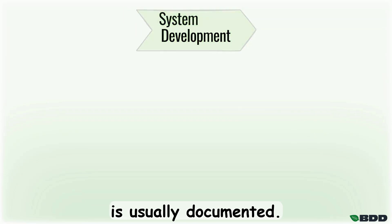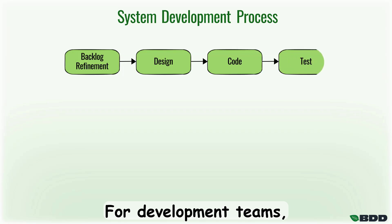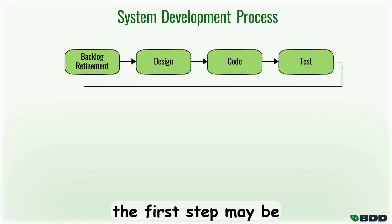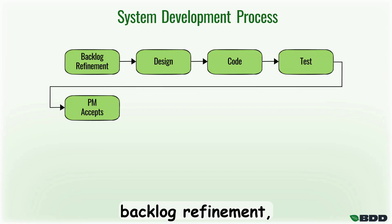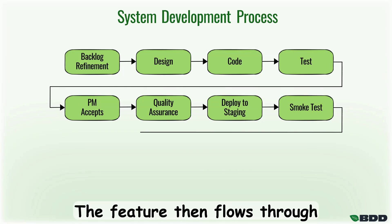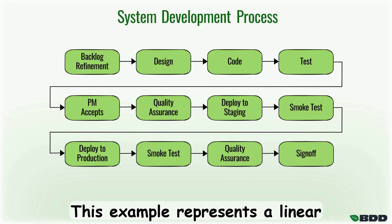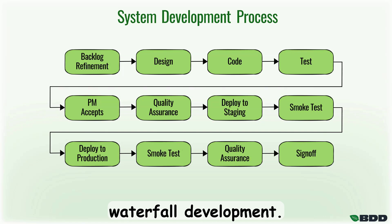Let's see how this process is usually documented. For development teams, the first step may be backlog refinement, where a feature is defined and prioritized. The feature then flows through the process until it's signed off. This example represents a linear sequence, usually called waterfall development.